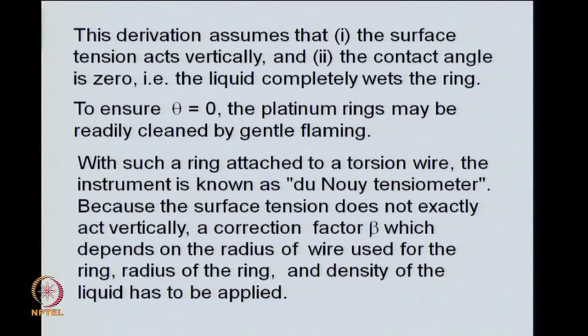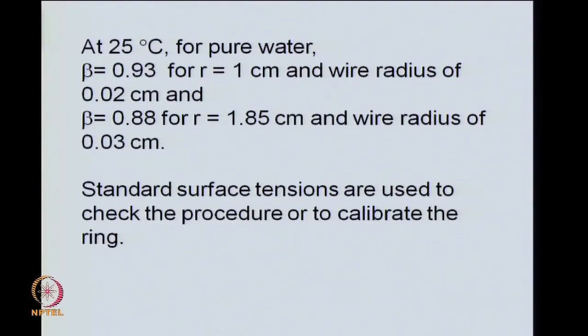It would mean that we may have to use some corrections. One would obviously ensure the zero contact angle by gently flaming the platinum ring. But the correction factor beta is still necessary and that would depend on the two radii, the radius of the wire, radius of the ring and the density of the liquid. One requires the apparatus to be calibrated with the help of standard tensions for pure liquids.